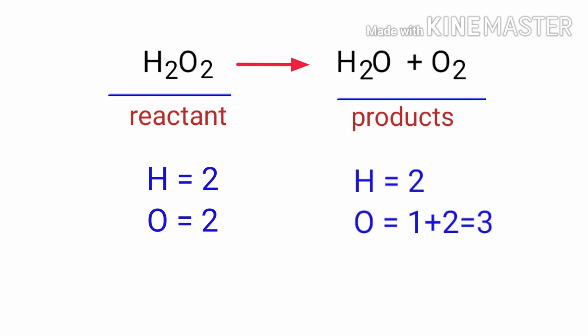If you look at this equation, the equation is not balanced. In the reactants side there are two hydrogen atoms and two oxygen atoms present. On the products side there are two hydrogen atoms and three oxygen atoms present.